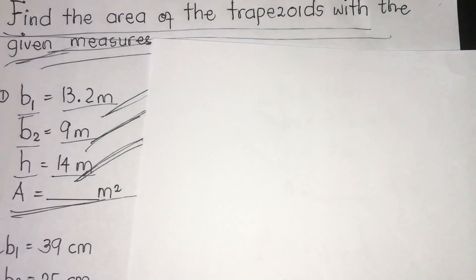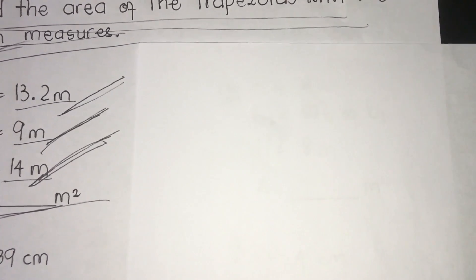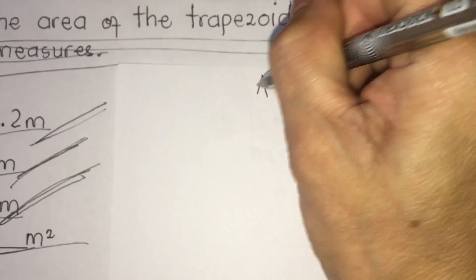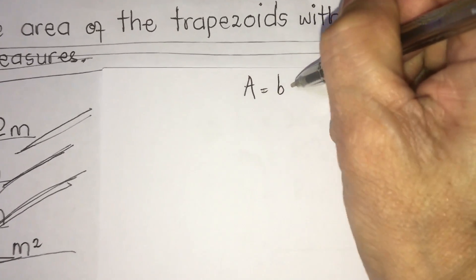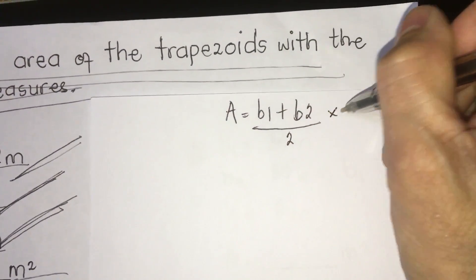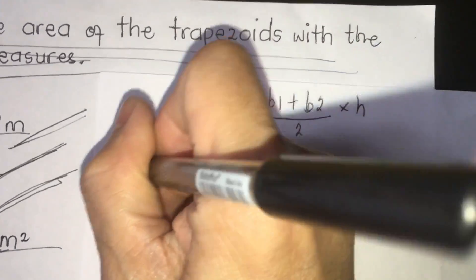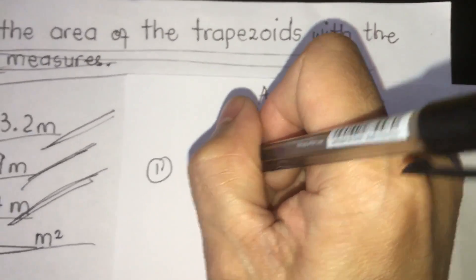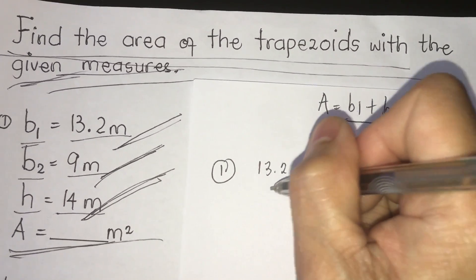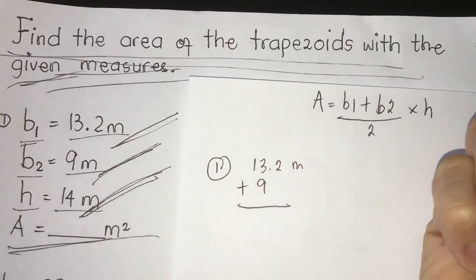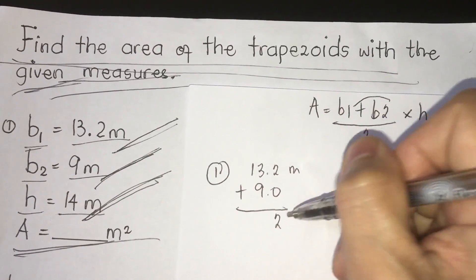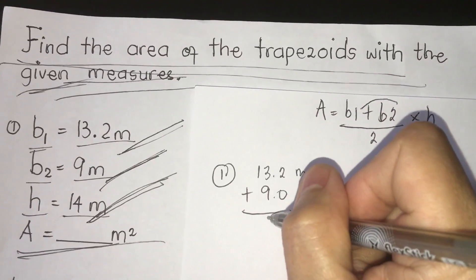I have a scratch paper to show you how to solve it. For number one, let's write the formula: b1 plus b2 divided by 2, times height. B1 is 13.2 meters and b2 is 9 meters. We're going to add them — 13.2 plus 9 equals 22.2.